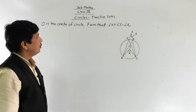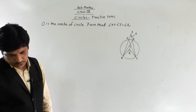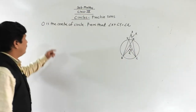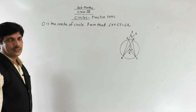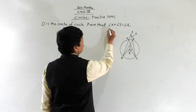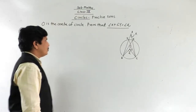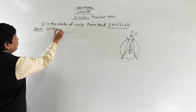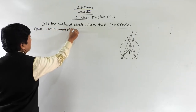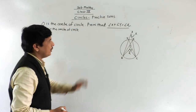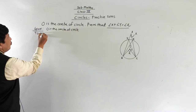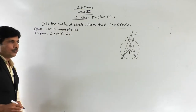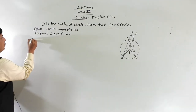Our next problem: O is the center of the circle. Given that O is the center, prove that angle X plus angle Y is equal to angle Z. The figure is given, and we need to prove this using the given figure.